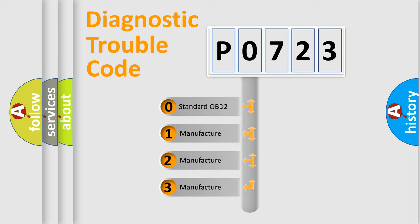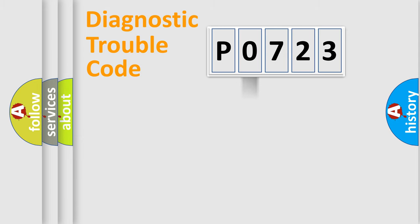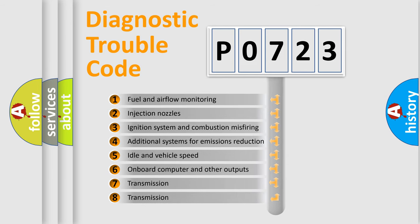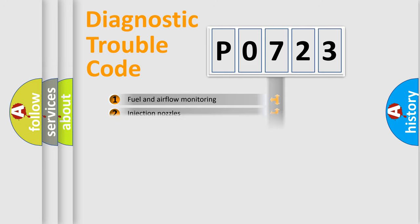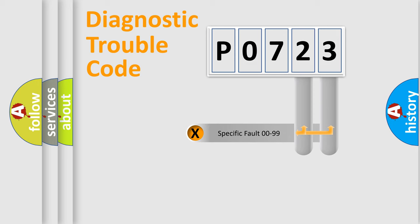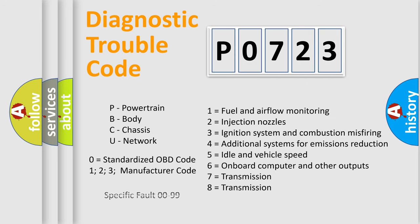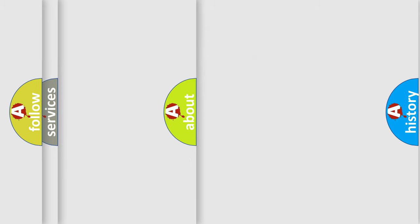If the second character is expressed as zero, it is a standardized error. In the case of numbers 1, 2, or 3, it is a more specific car-manufacturer expression. The third character specifies a subset of errors. This distribution is valid only for the standardized DTC code, and only if the second character is expressed by the number zero.